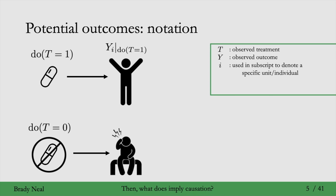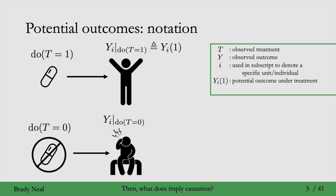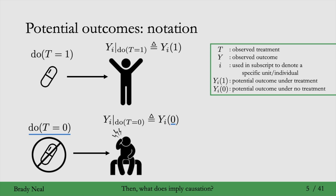Y_i evaluated when I take the treatment is up here on the top right, and Y_i evaluated when I don't take the treatment — T equals zero — is on the bottom right. The subscript i denotes a specific individual or unit. This notation is a bit cumbersome, so we'll use a simpler notation. Y_i(1) denotes the potential outcome I would observe if I were to take treatment (T equals 1), and Y_i(0) is the potential outcome I would observe if I were to not take the pill (T equals 0).